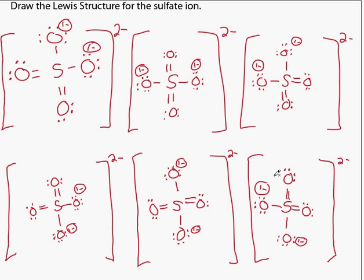So what the question says, draw the Lewis structure for the sulfate ion. The word 'the' can be misleading. Sometimes the Lewis structure is actually an average of multiple resonance structures.